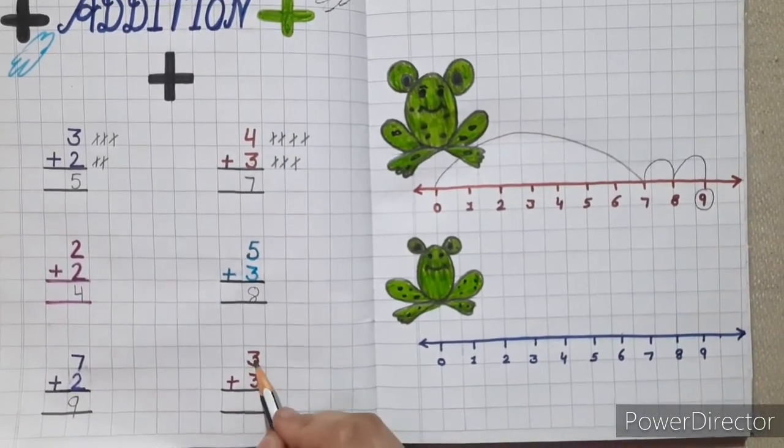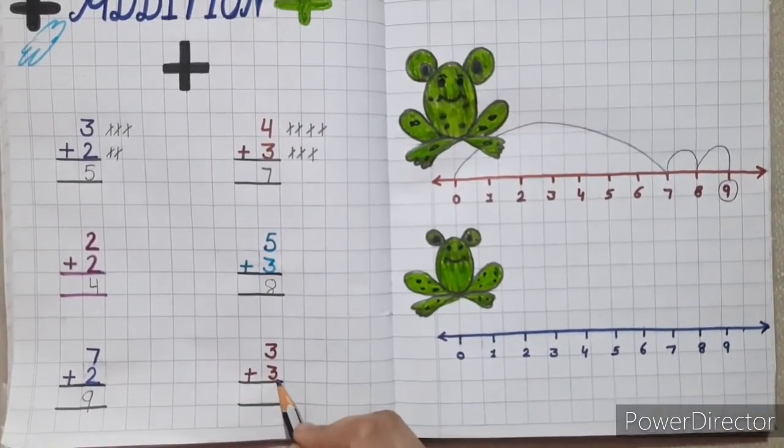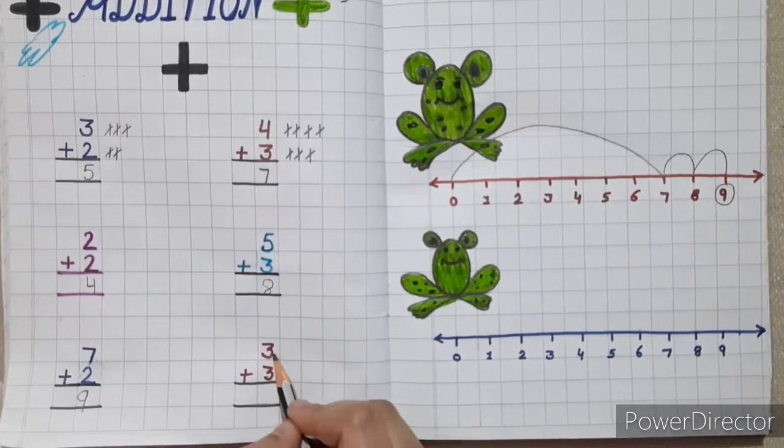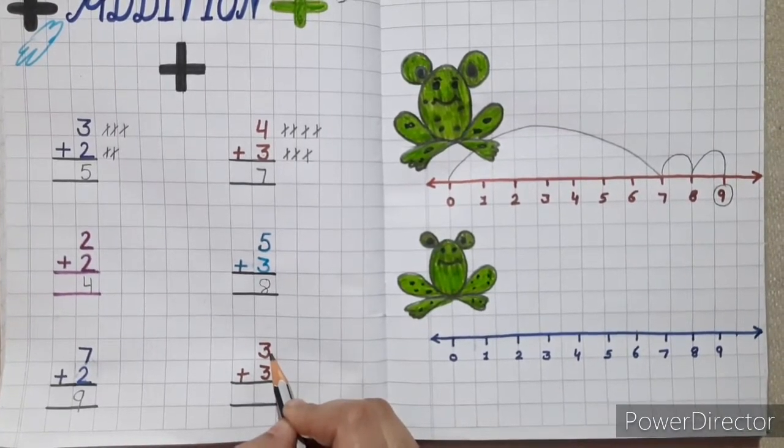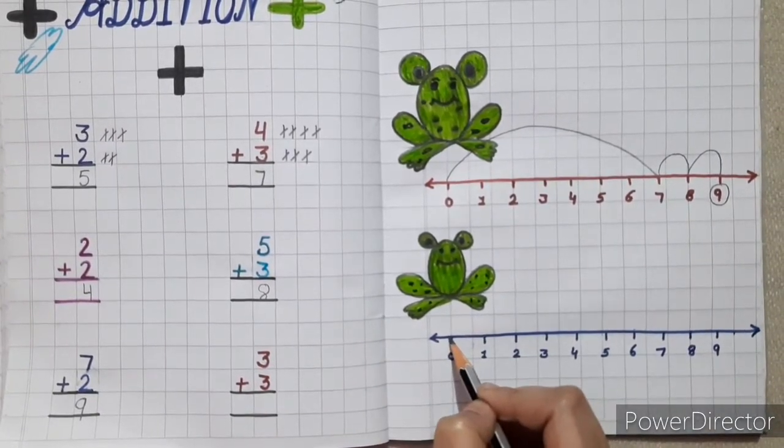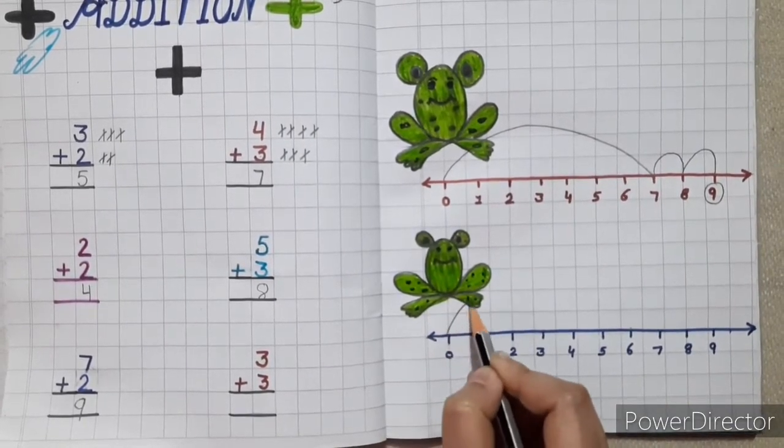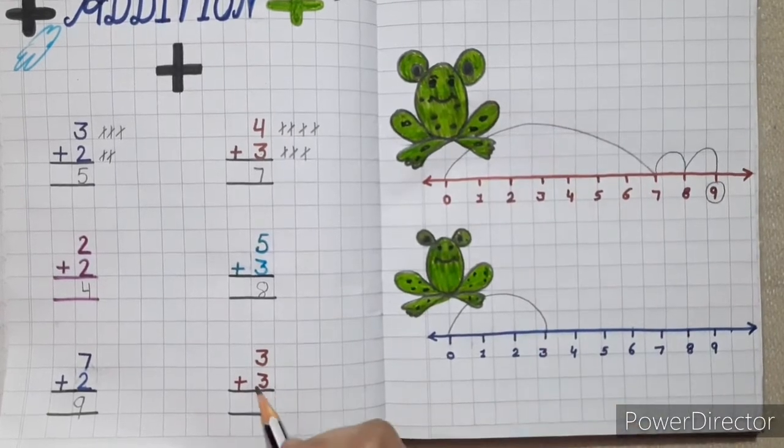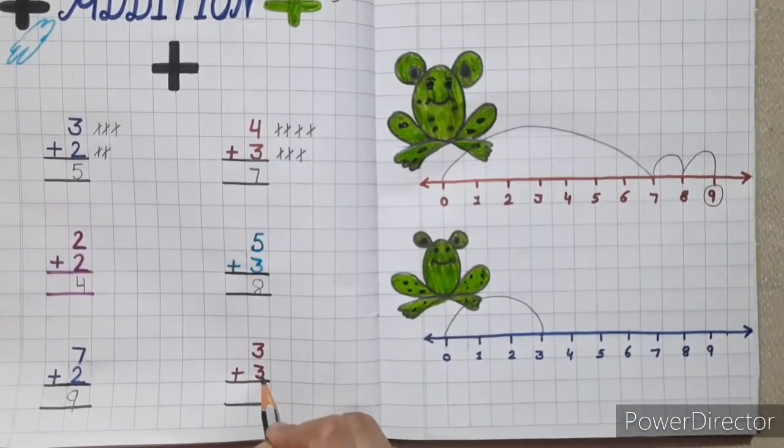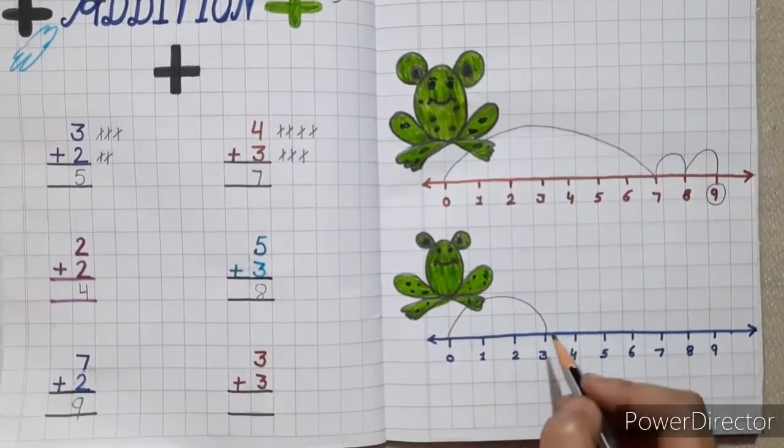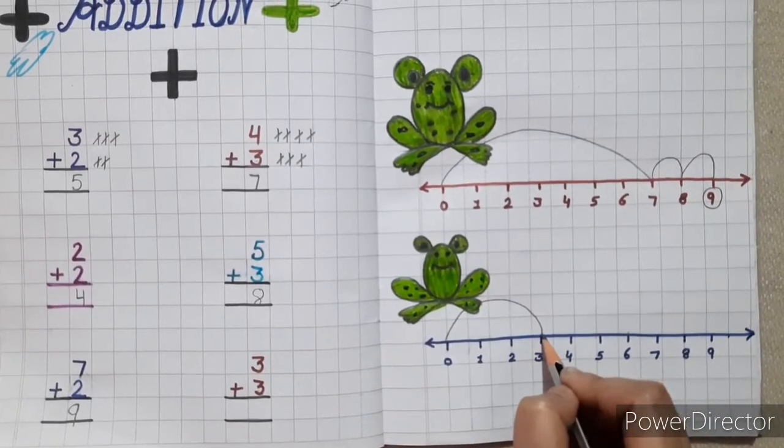Next is 3 plus 3. Here, first number is 3. So firstly, frog will jump directly from 0 to 3. So frog will jump 3 times from here.